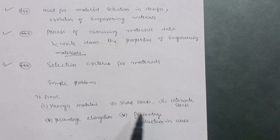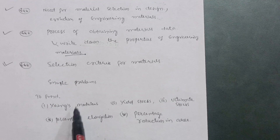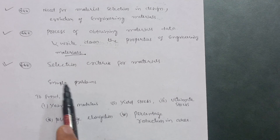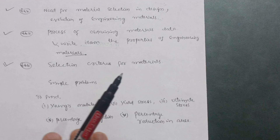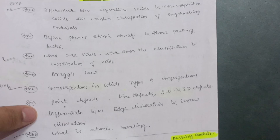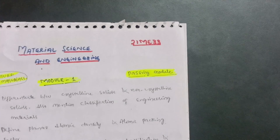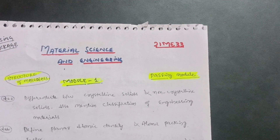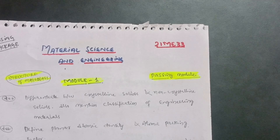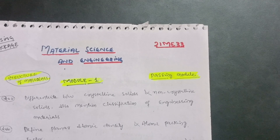You have to find out Young's modulus, yield stress, ultimate stress, percentage elongation, and percentage reduction in area. Try these problems — they are simple. Just put in the formulas for Young's modulus and yield stress and you can easily find the values. This is enough to pass the Material Science subject. The syllabus is very vast, so I have selected these important questions to make it easy for you.